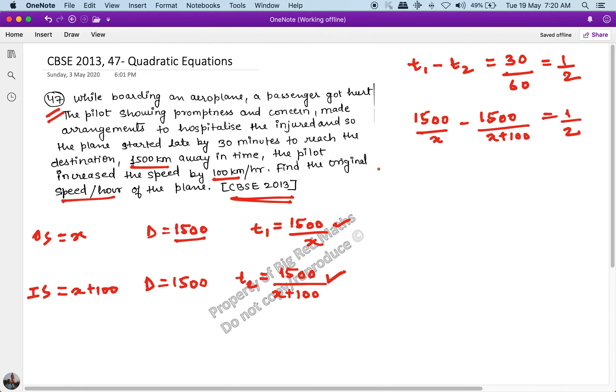Now we just have to solve this equation. Remember, the main challenge of this entire word problem is to convert this simple English into this equation. Now we can take 1500 common.